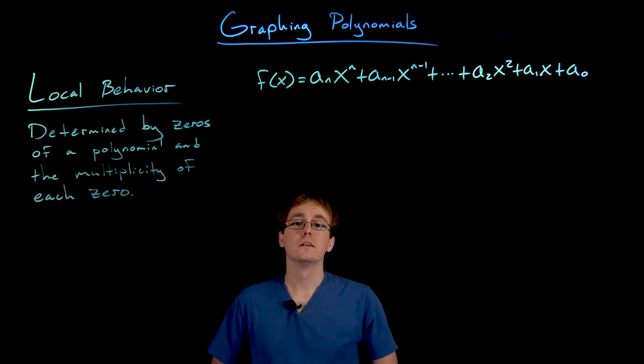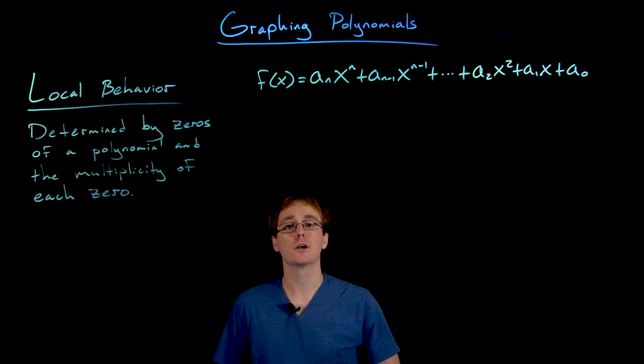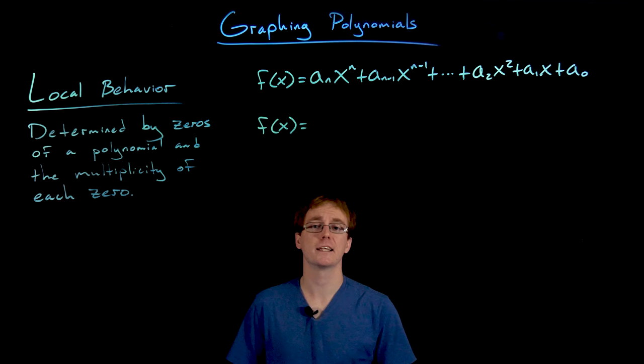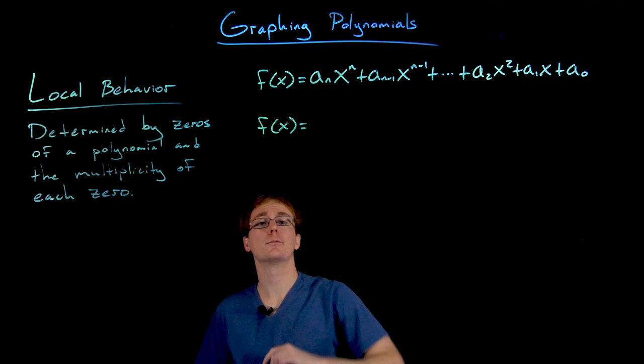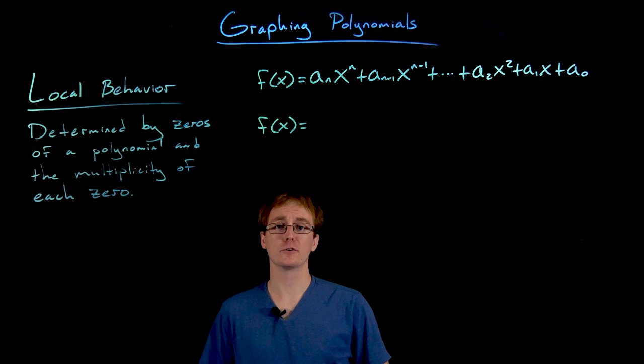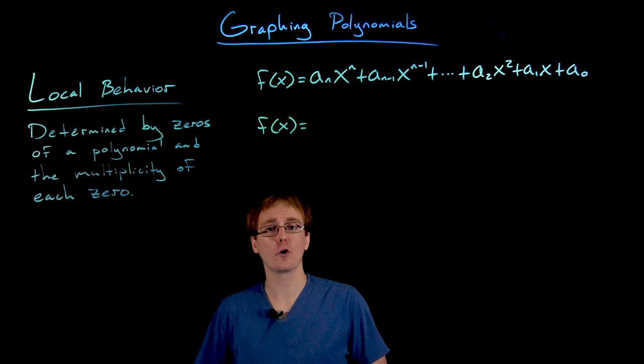Hey everyone, welcome back. Now we're ready to talk about the local behavior or short-run behavior of a polynomial function. Once we've analyzed the local and end behavior of a specific polynomial function, we'll have all the information we need to sketch a graph. The end behavior was determined entirely by the leading term, while the local behavior is determined by the zeros of our polynomial and the multiplicities of each zero.